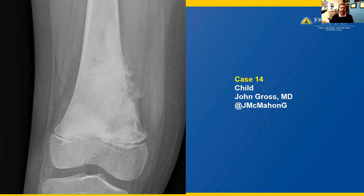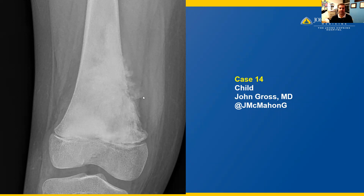Plain film radiographs show an aggressive appearing radio density in the metaphysis in the distal femur, shown here with this very white radio density, both intramedullary as well as breaking through the cortex and lifting the periosteum here as a so-called Codman's triangle. This is a very aggressive pattern and concerning for an osteosarcoma.